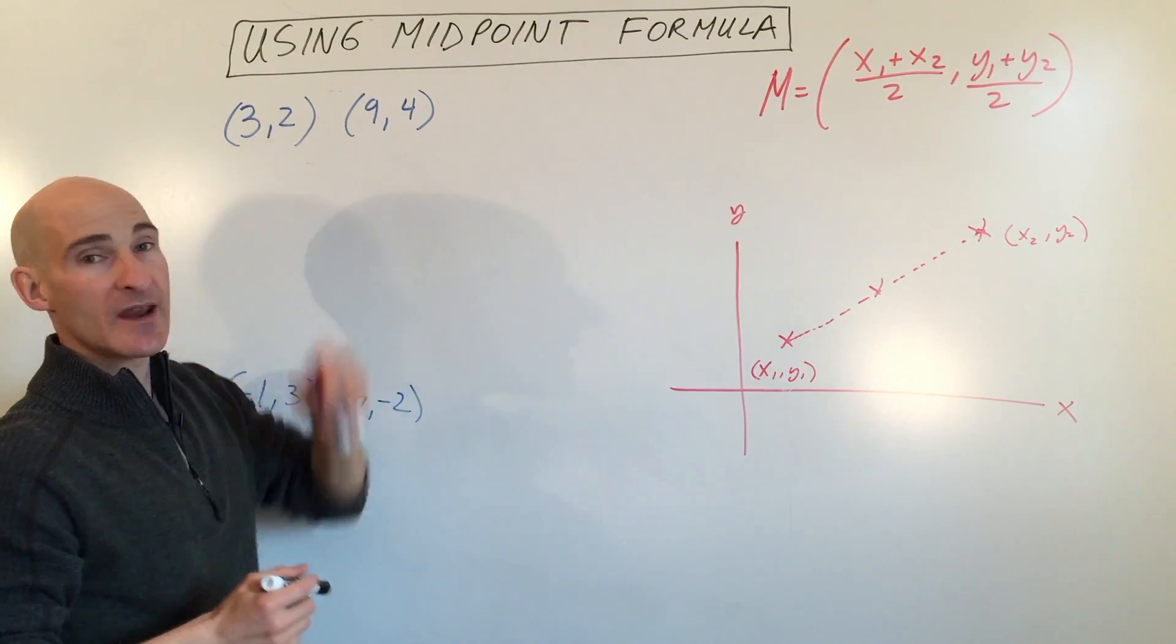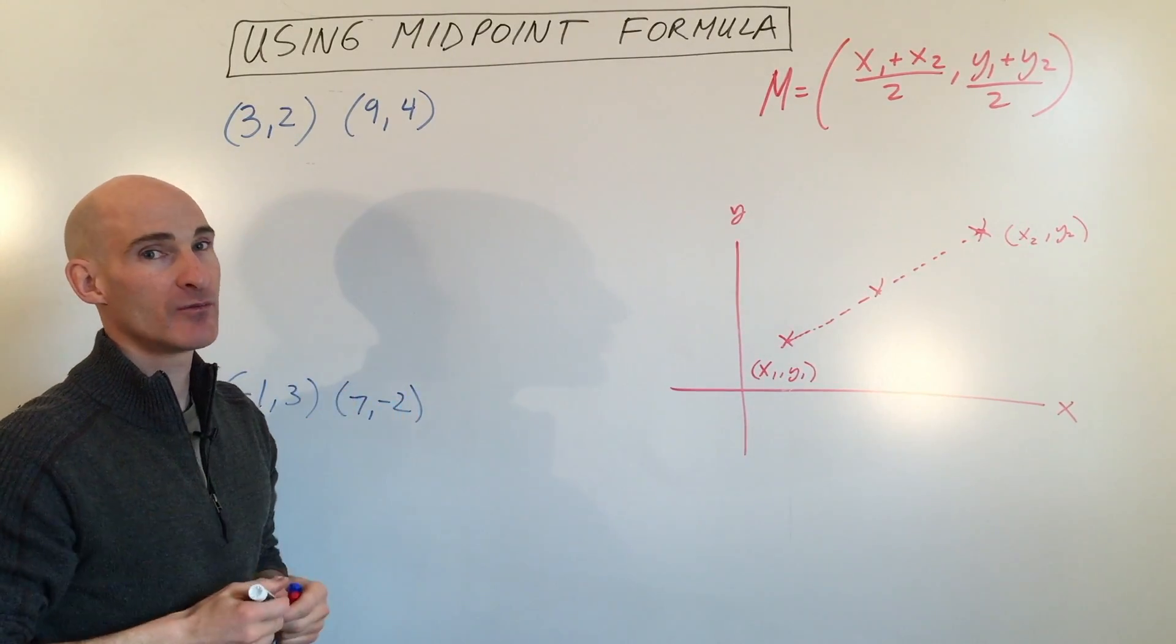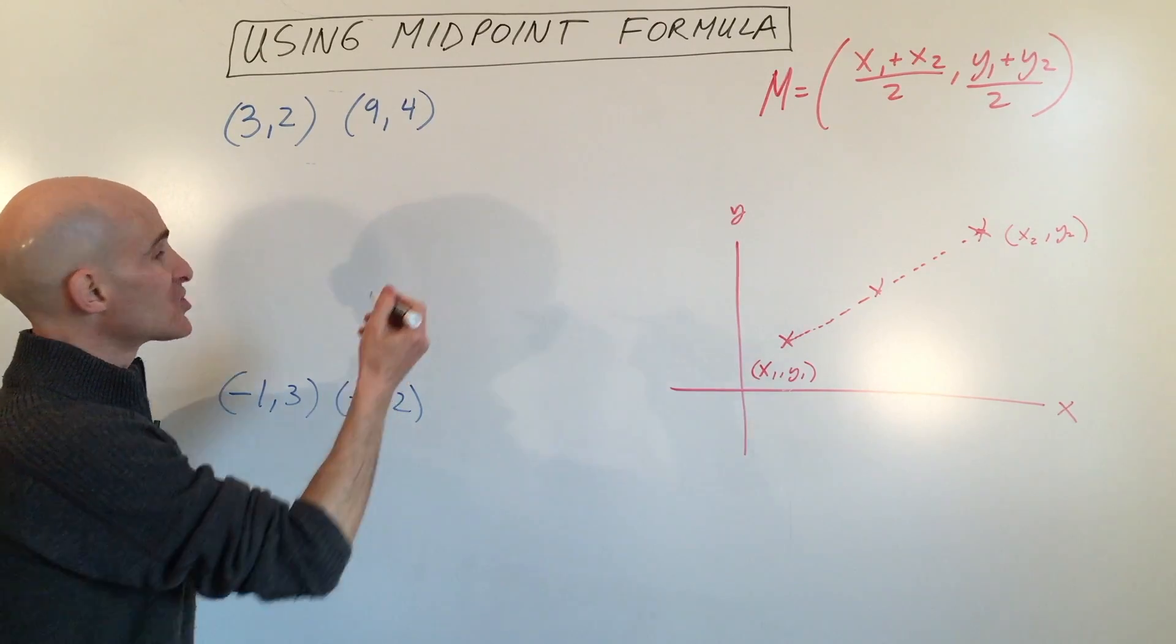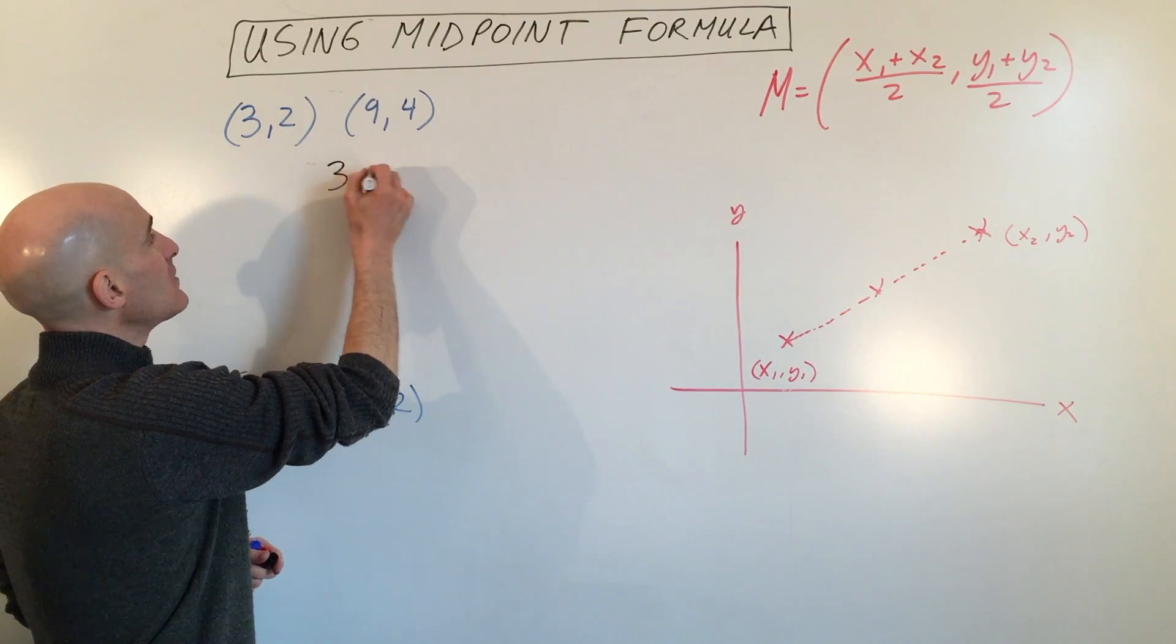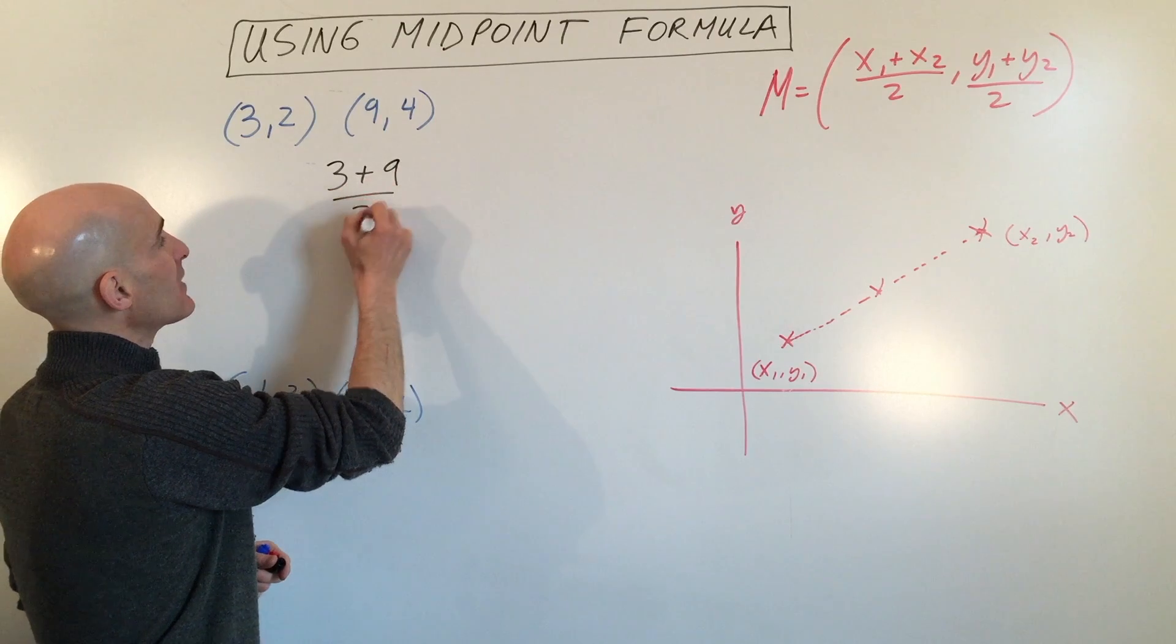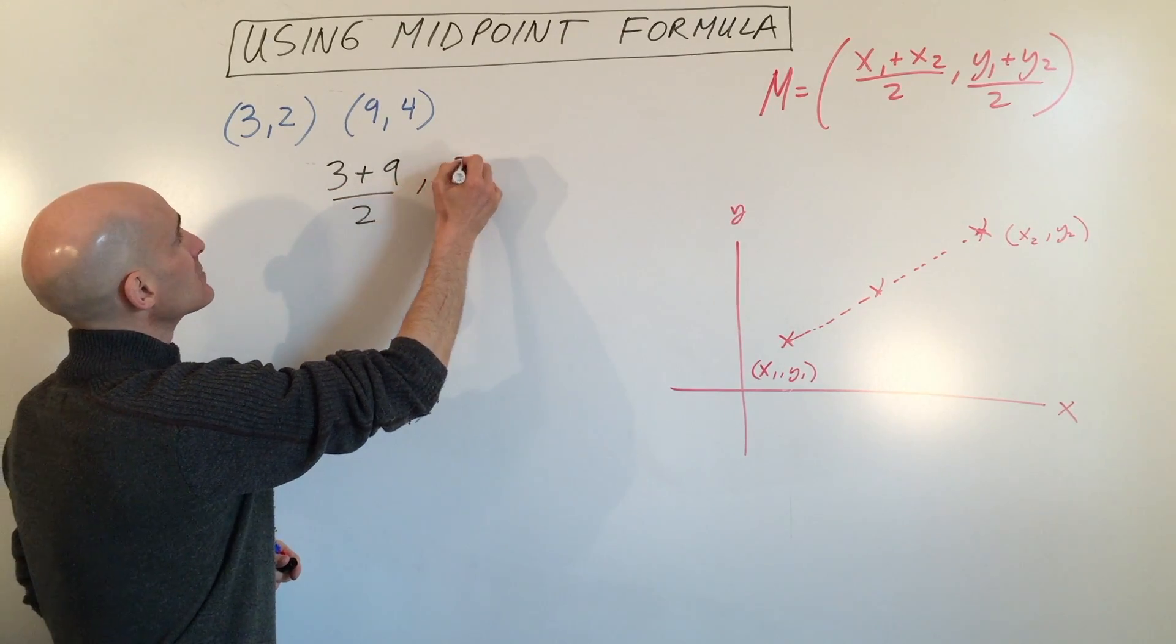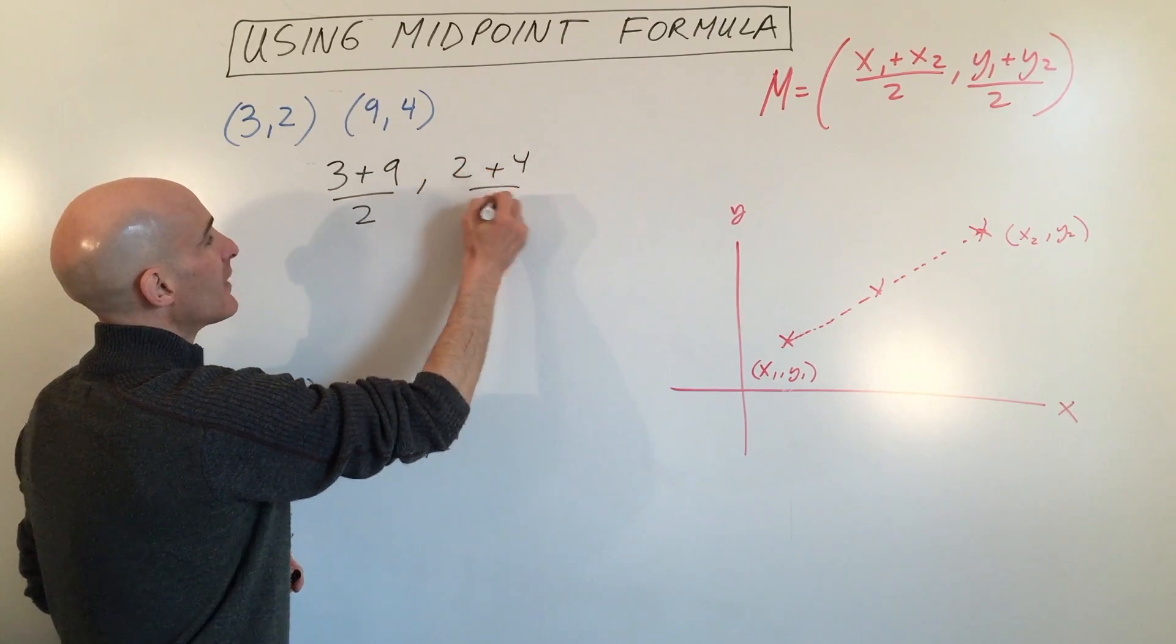Say we have the two points, three, two, and nine, four. We want to find the middle, the point halfway in between. So it's just like an average. We're going to say three plus nine divided by two, and two plus four divided by two.